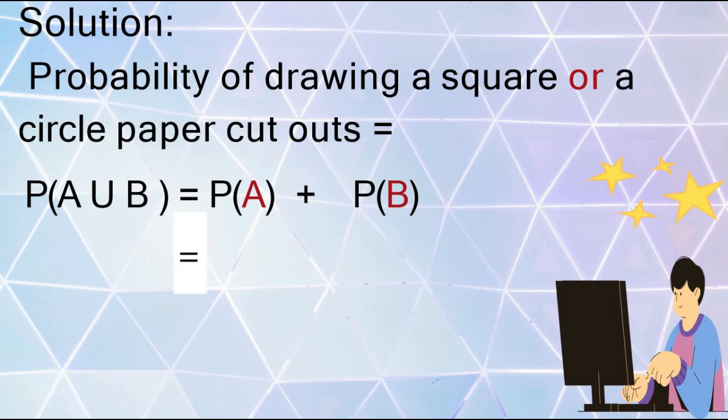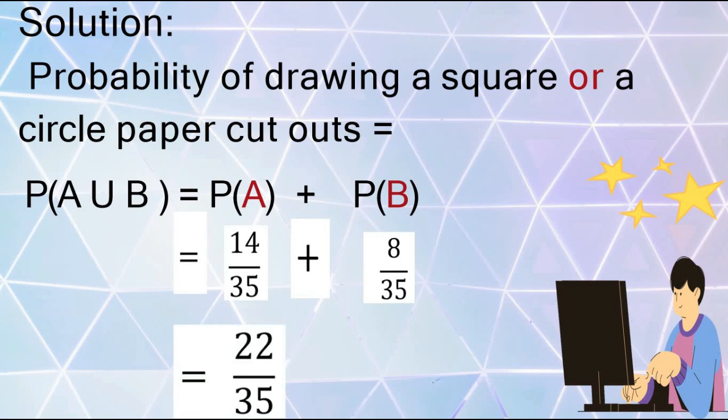Since P(A) = 14/35 and P(B) = 8/35, we combine the numerators to get 22 and copy the common denominator of 35. Rewriting 22/35 in decimal or percentage form, this is the same as 0.63 or 63 percent.